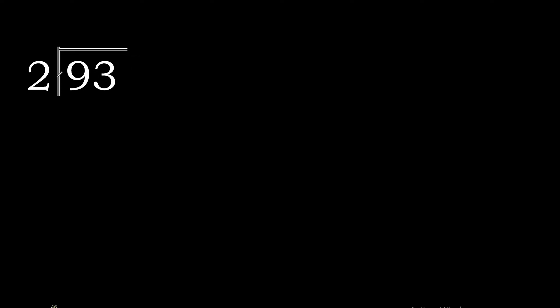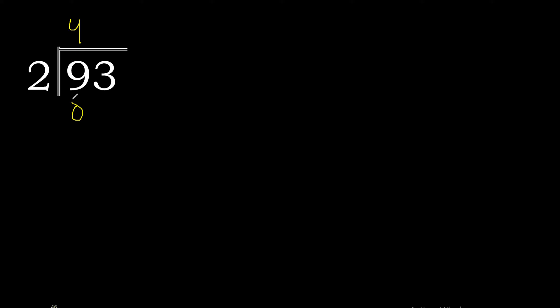93 divided by 2. 9 is not less than 2, therefore start with 9. 2 multiplied by 5 is 10, excessive. Multiplied by 4 is 8 — 8 is the closest. 9 minus 8 is 1.